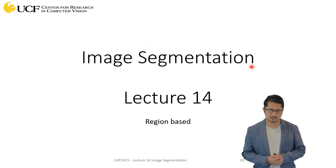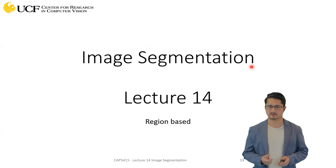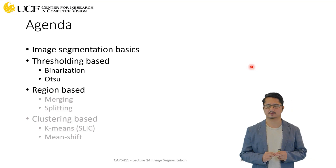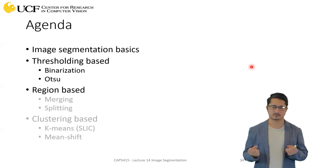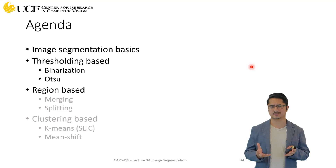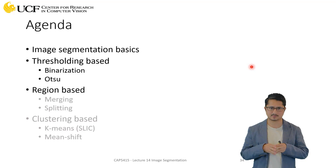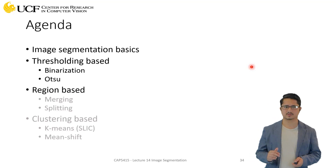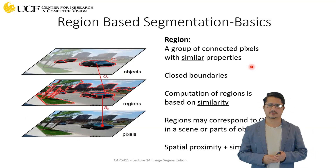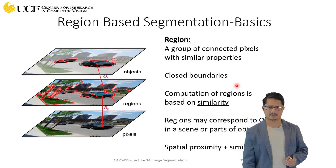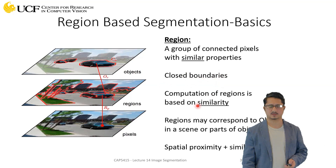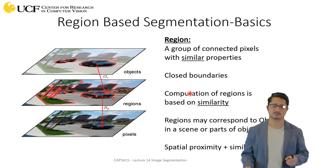Next, let's move to region-based approaches for image segmentation. We'll cover two different approaches: the first merges different pixels to grow regions (region growing), and the second is a top-down approach that splits different regions to create smaller segments (region splitting). Both are essentially the reverse of each other, and both use some kind of similarity measure between neighboring pixels to determine whether they belong to the same group.